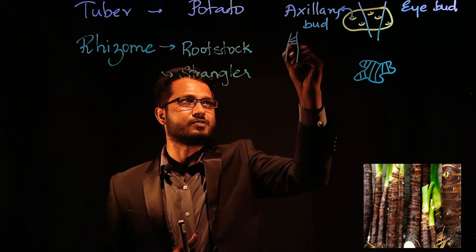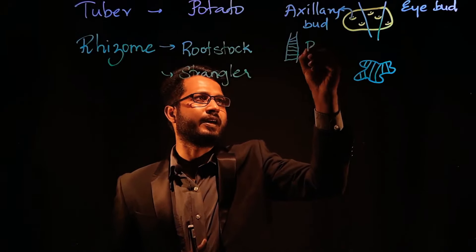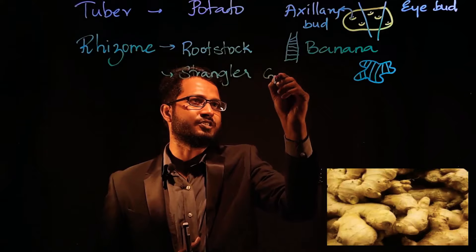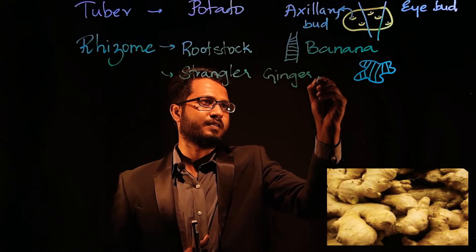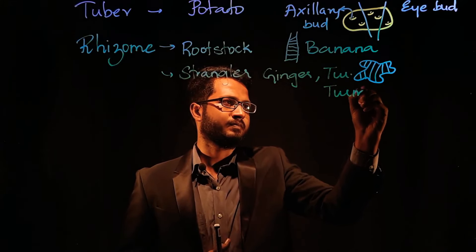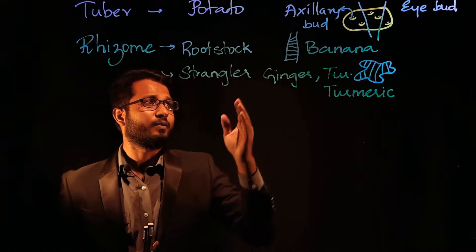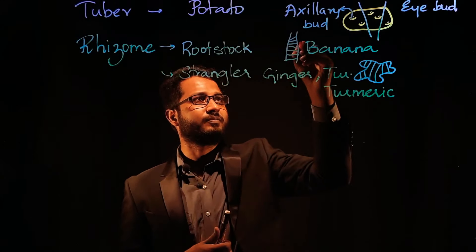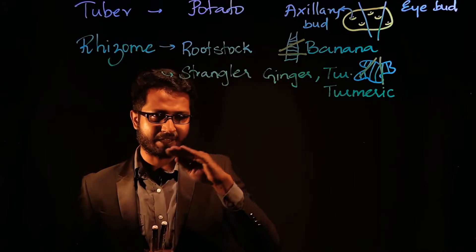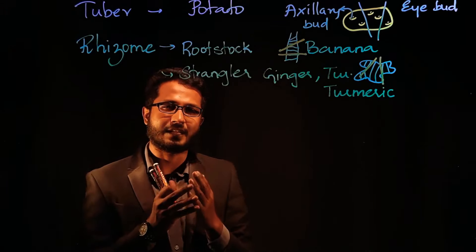Rhizomes have nodes and internodes on themselves. If I make pieces of the rhizome and sow them down by scraping the upper layer, each piece is going to give rise to a new plant. I am using a vegetative part which helps in multiplication.